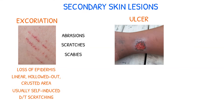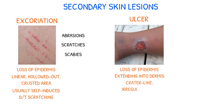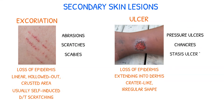An ulcer is a loss of the epidermis extending into the dermis that has a crater-like, irregular shape. Examples of ulcers include pressure ulcers, chancres, and stasis ulcers.